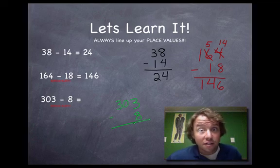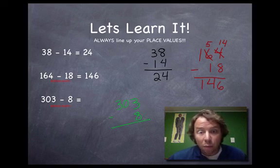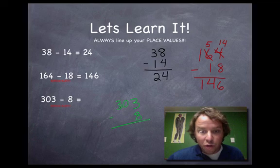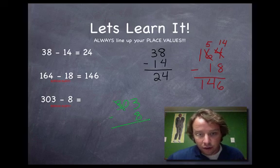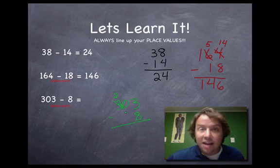If you said 5, think again — it's not 5. You can't take 8 away from 3; you have to borrow. But the 3 can't borrow from a zero. So the zero has to first borrow from the 3 in the hundreds place. That hundreds 3 becomes a 2, and we put a 1 in front of the zero — making it a 10.